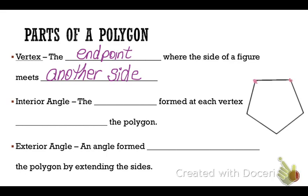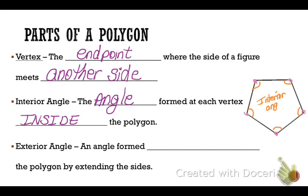These corners are all vertices. A polygon also has angles. We have interior angles, and those are the angle formed at each vertex inside the polygon. Looking at our shape, all of the ones marked in orange are interior angles.